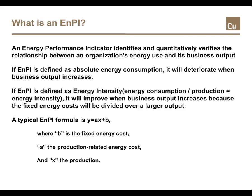If the performance indicator was based on the absolute amount of energy consumed, it would appear that energy performance was good whenever business outputs were low. If energy intensity was used to set the performance indicator, there would be a discrepancy whenever business outputs increased, because fixed energy costs would remain the same.